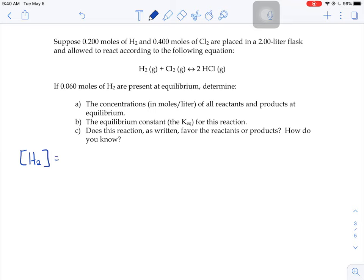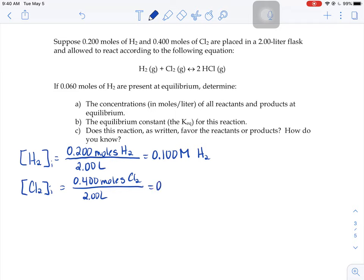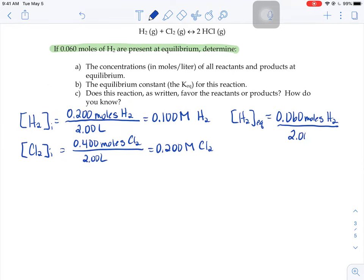So the hydrogen in the beginning we took 0.2 moles worth of hydrogen. I should label this with a little I for initial. We initially put 0.2 moles worth of hydrogen into that 2 liter flask, so the molarity of the hydrogen in the beginning is 0.1. If we do the same thing with our chlorine, initially we put 0.4 moles worth of chlorine into that same 2 liter flask, so its molarity would be 0.2. And then underneath the balanced equation right here it gives us some information about hydrogen at equilibrium. That there are 0.060 moles of hydrogen in that same 2 liter flask, so the molarity of hydrogen at equilibrium would be 0.030.